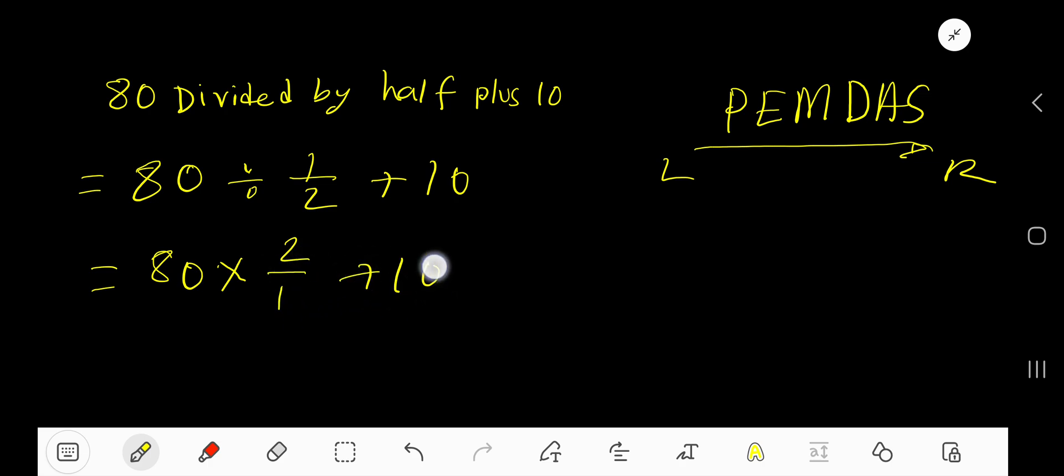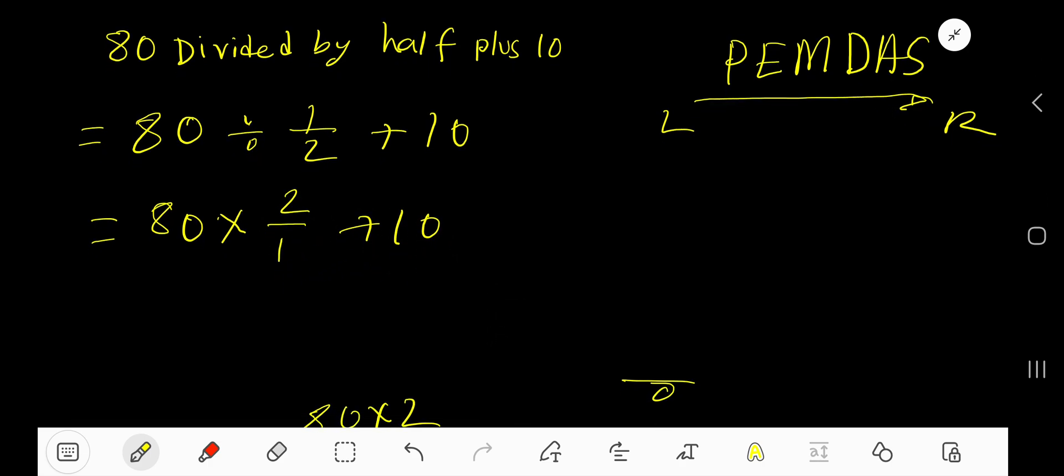Okay, so now we have multiplication and addition. So multiplication will get priority. So multiply 80 times 2 means what? 80 times 2. 160.